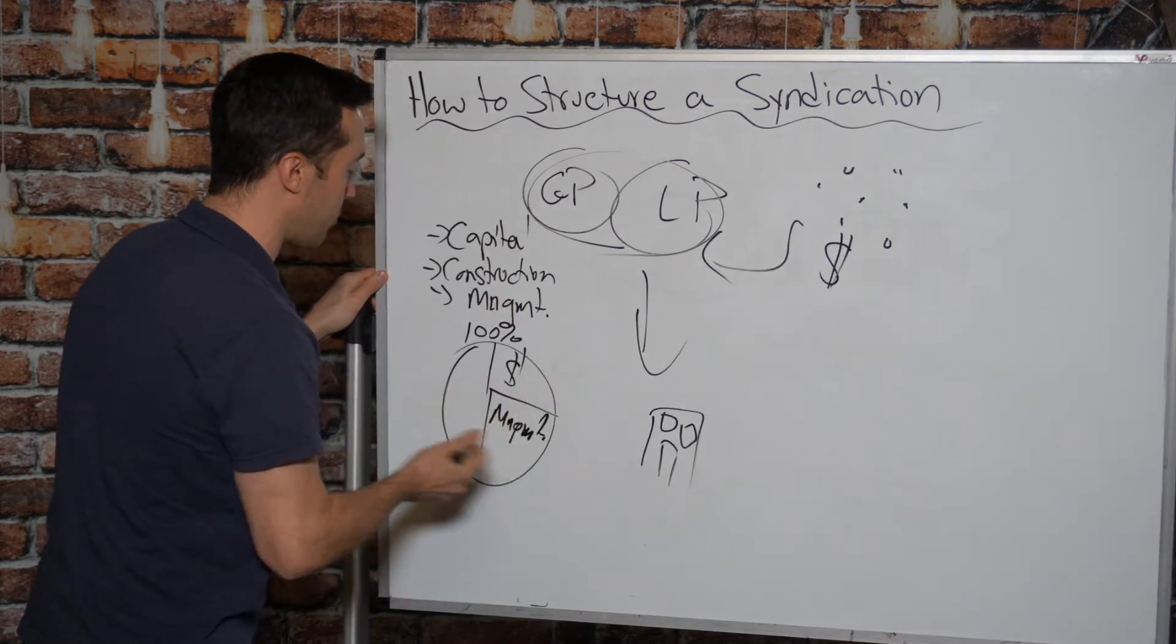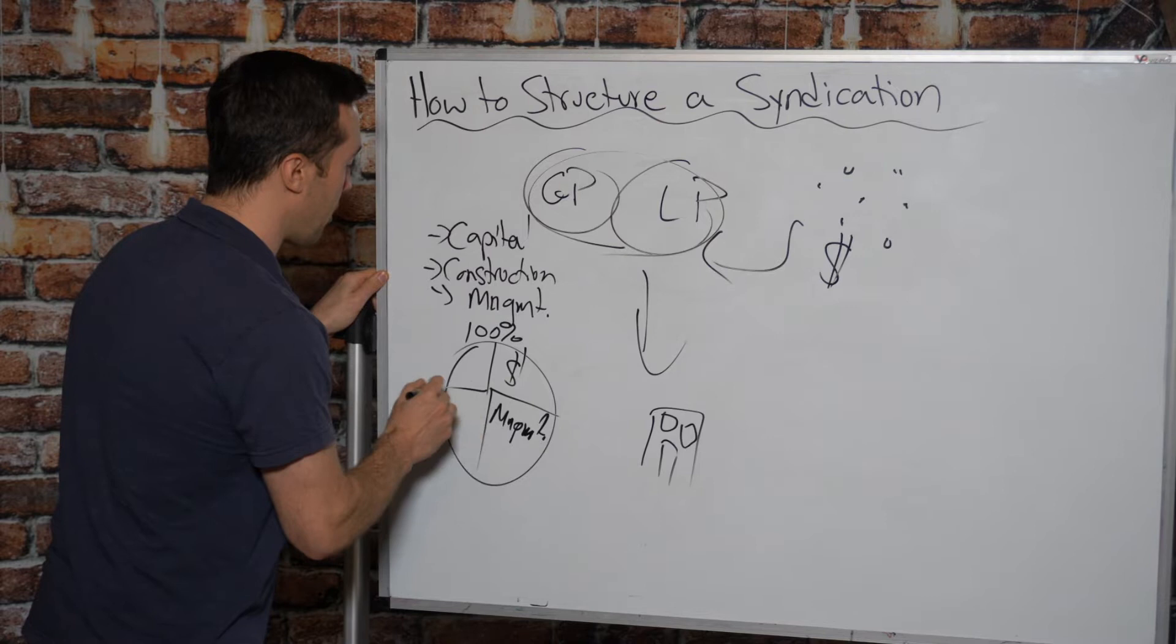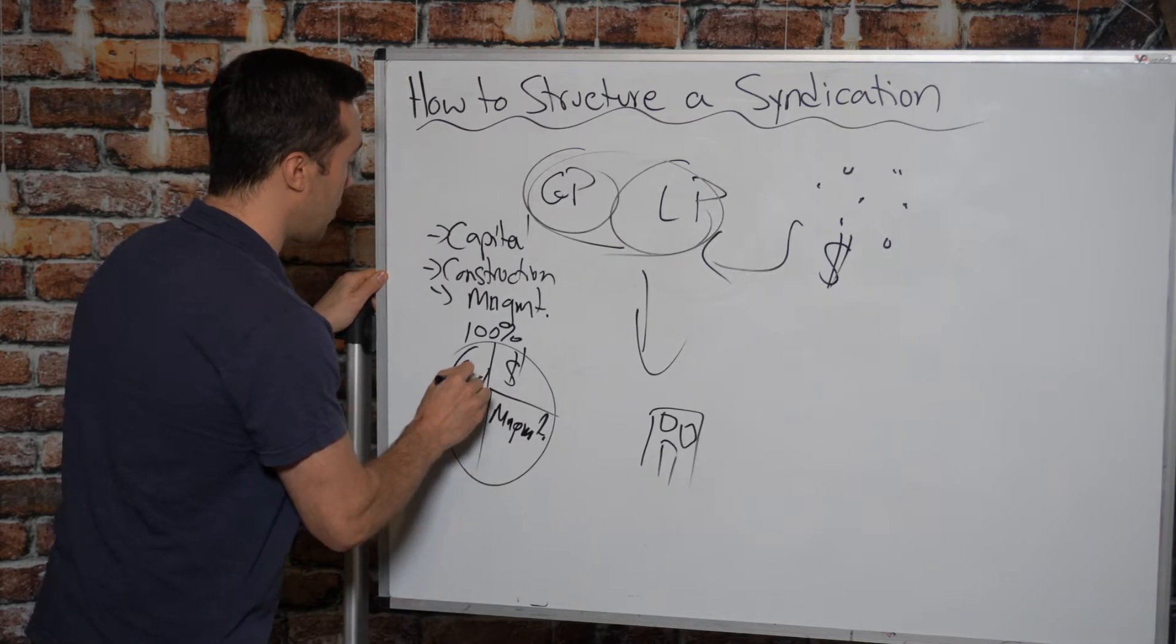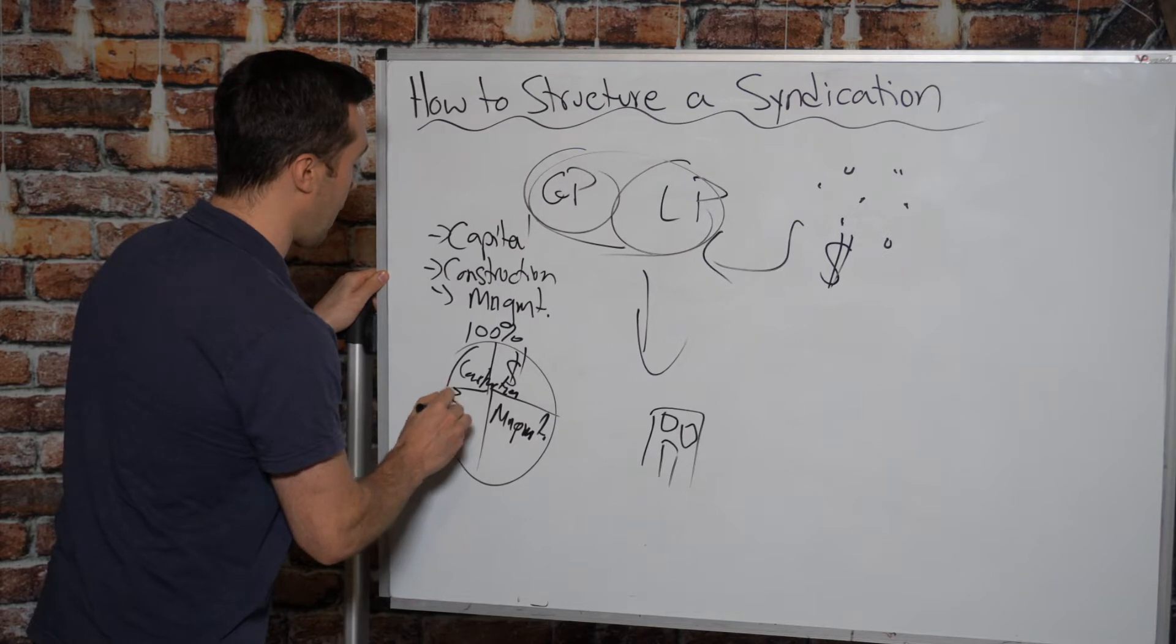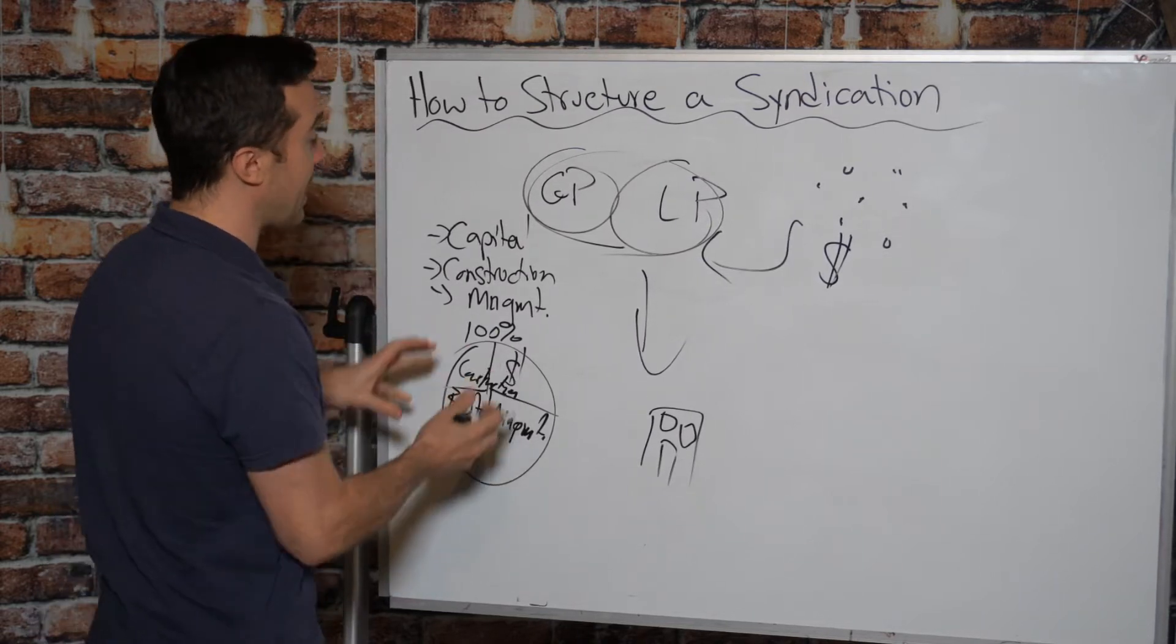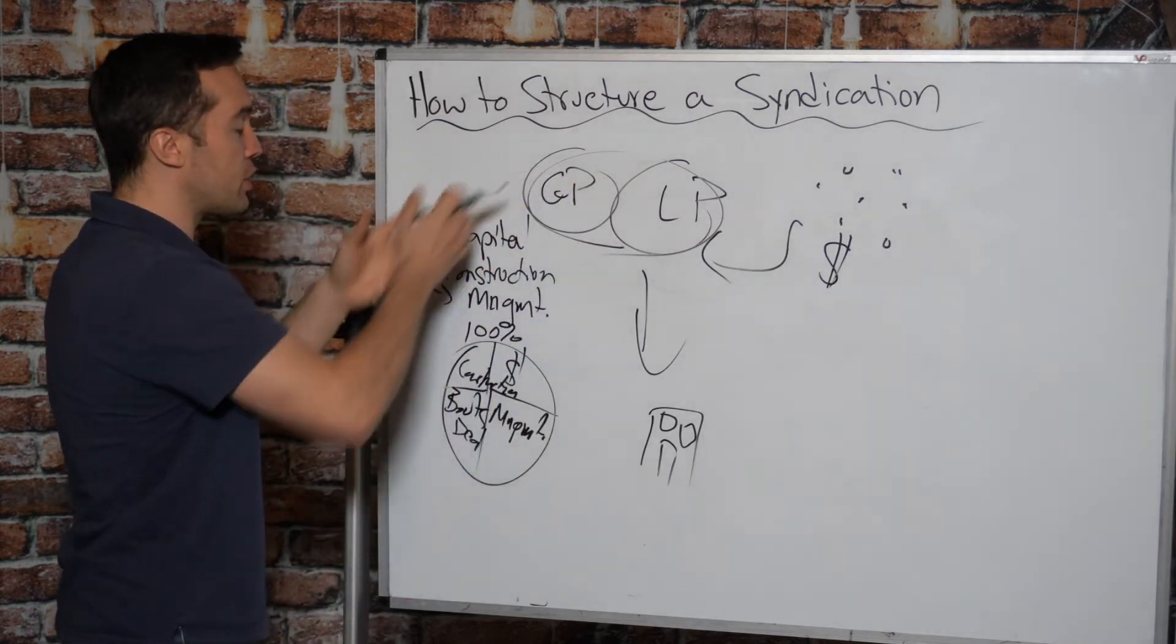And again, I'm just using very rough numbers here. Maybe a quarter is construction. And then maybe a quarter is going to boots on the ground and whoever found the deal. This could be an example of how the general partnership is split up.